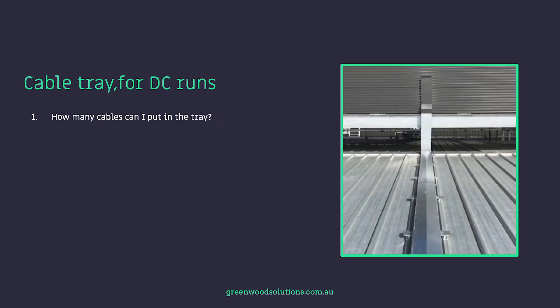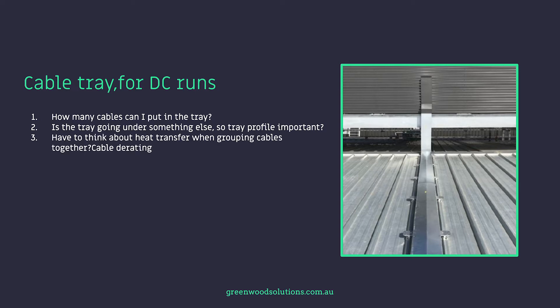For a cable tray on DC runs, here are some questions you should ask: How many cables am I putting in the tray? Is the cable tray going under something else? And of course, consider heat transfer. You're putting cables in a tray and they're producing heat. Then you add another cable next to that existing one, and then another — this all plays a role, not only how far apart they are but how many there are.